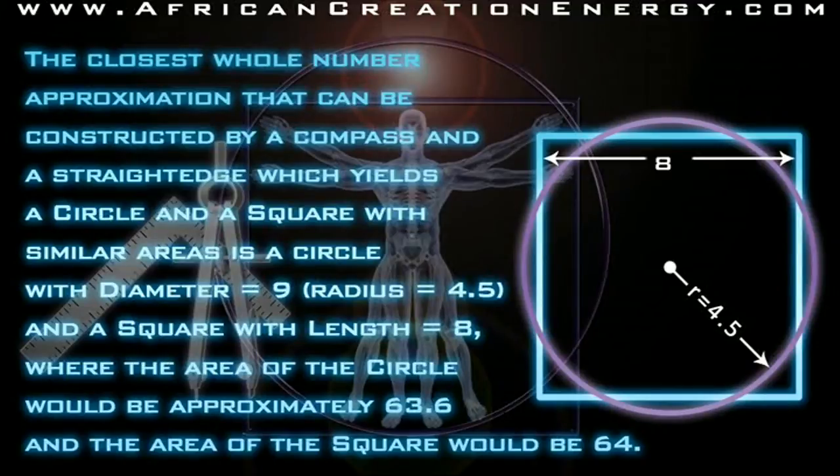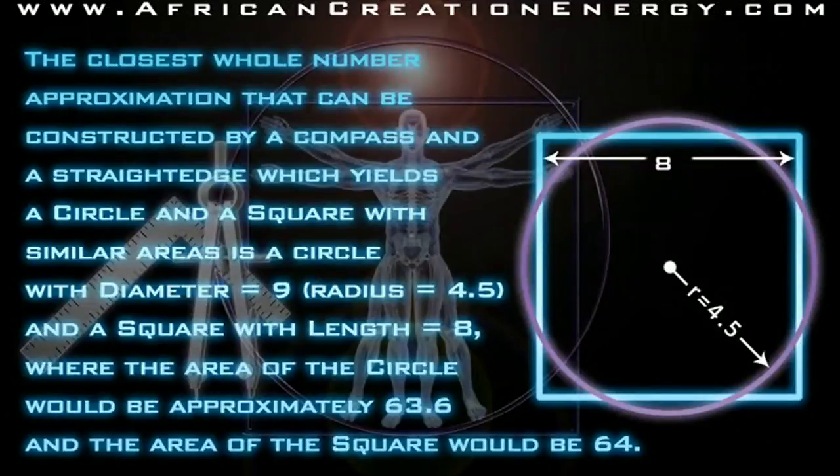If anybody ever asked you, can you square the circle, can you make a circle in the square with approximately the same area, then you just draw a square with a circle, each one having an 8 inch size and a circle with diameter 9, and that will get you a close approximation using whole numbers.